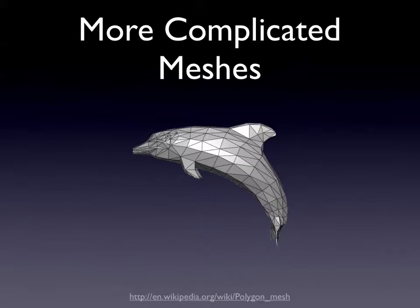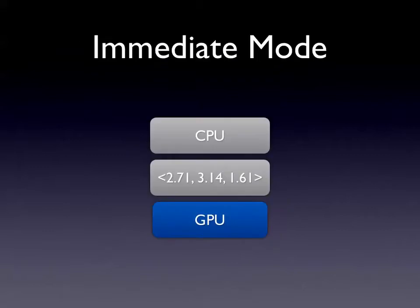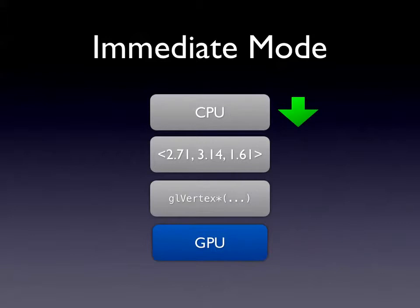Now we're going to have a look at vertices, which are basically the components that make up each model. Each vertex will have faces and these faces can be used to make up anything — you can use triangles, quads, and all these various primitives to make up a complicated model. The main concept is that every single model you have is essentially going to be made up of vertices and faces. What I'm going to talk about now is immediate mode, which is probably the first thing you want to think about when trying to optimize OpenGL.